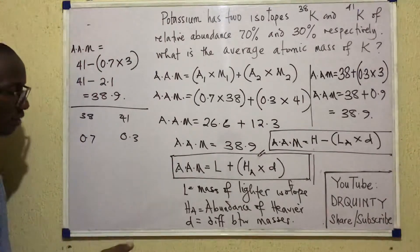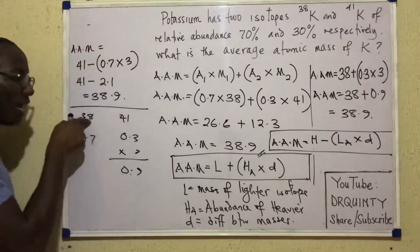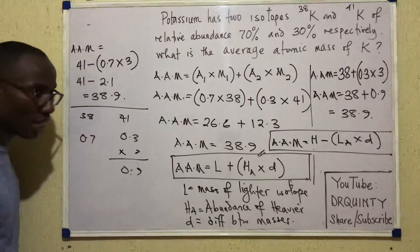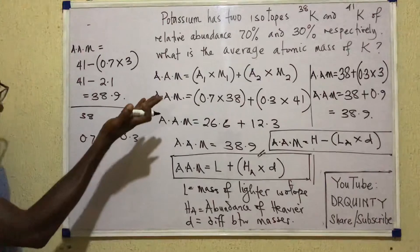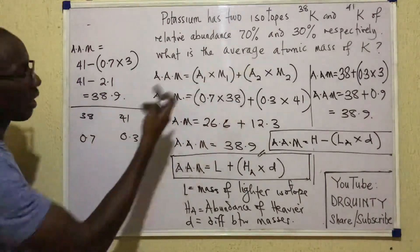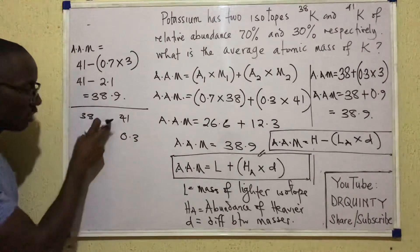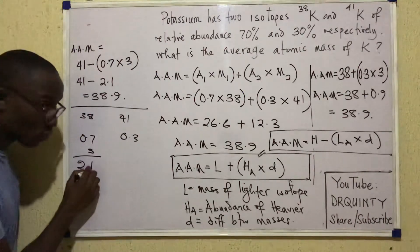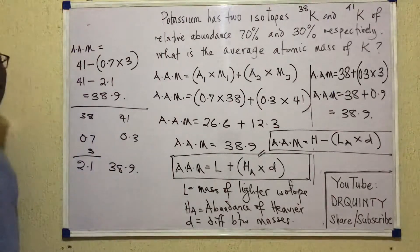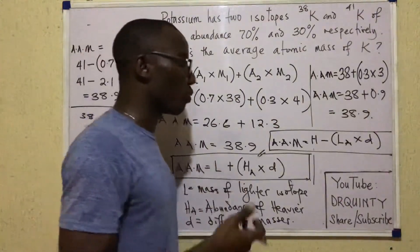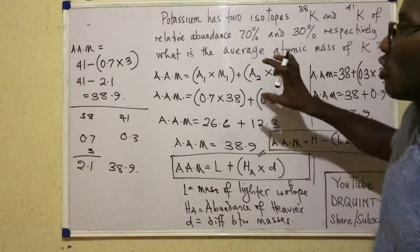So very quickly, I'll just ask myself, what's the difference? Yeah, the difference is 3. This is 0.3 times 3. That gives me 0.9. If I add it to 38, what does it give me? 38.9. Or, back to this. This is what I'm seeing in the question. 38 and 41, 70 and 30%. 0.7 times the difference between these two numbers is 3. That gives me 2.1. If I subtract that from 41, I'll get 38.9. So those are different ways of solving isotopic questions, especially when it involves just two isotopes.